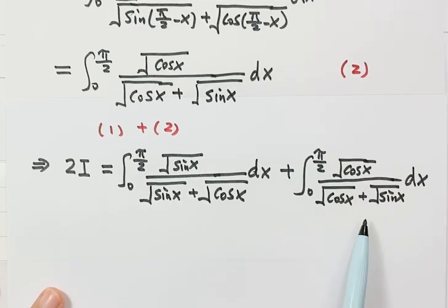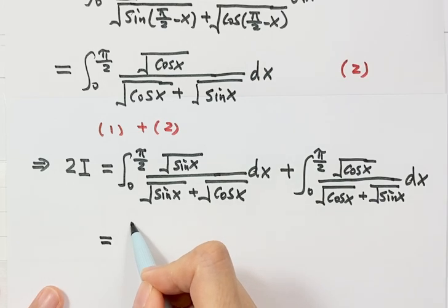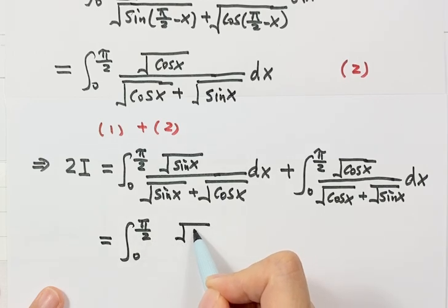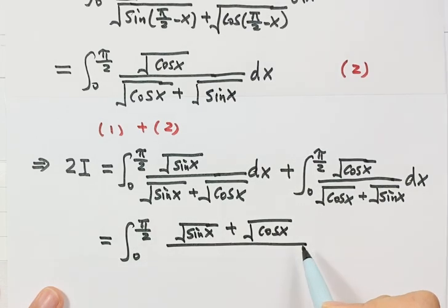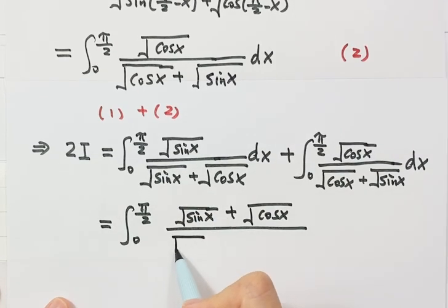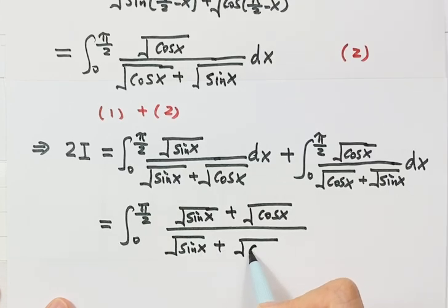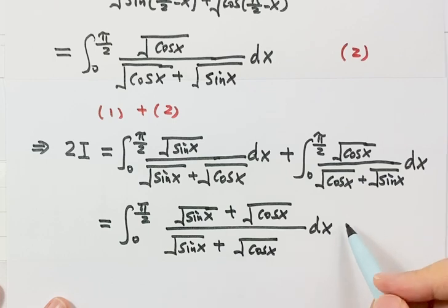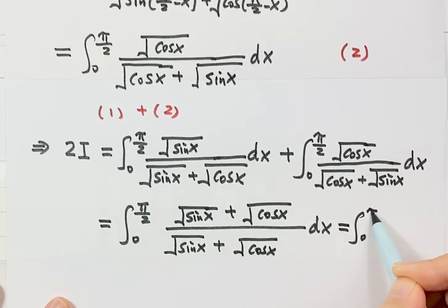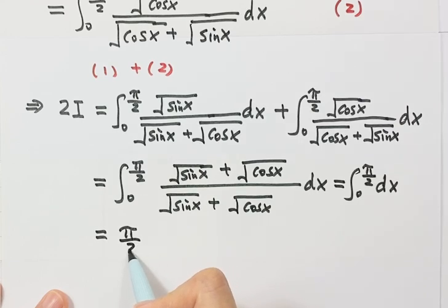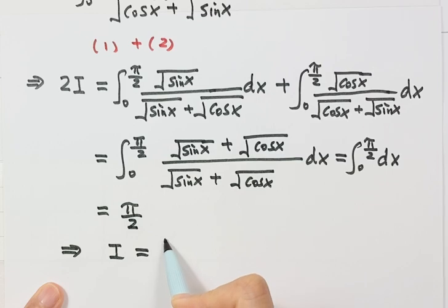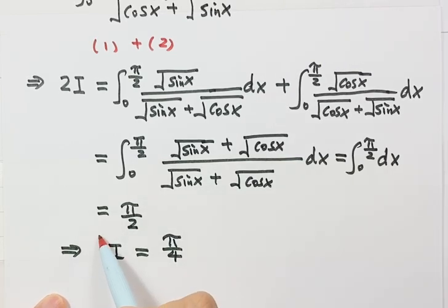Combining the two integrals, the numerator becomes √(sin x) + √(cos x) and the denominator is also √(sin x) + √(cos x), so they cancel. The integrand simplifies to 1, and integrating dx from zero to π/2 gives π/2. Therefore 2i = π/2, so i = π/4. That is the answer for the first integral.